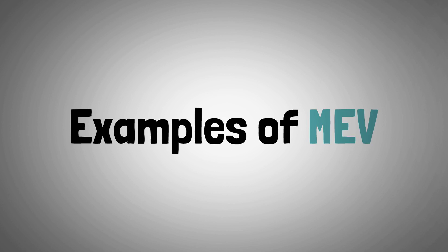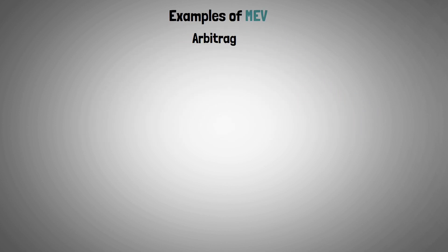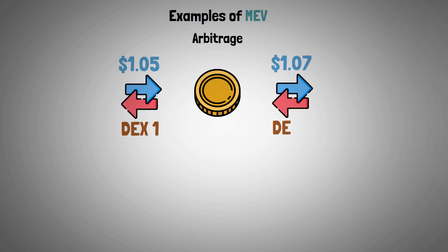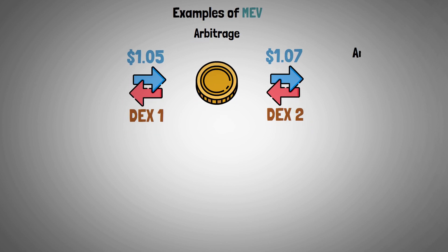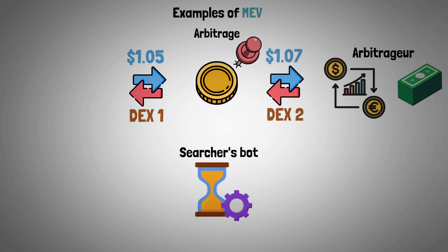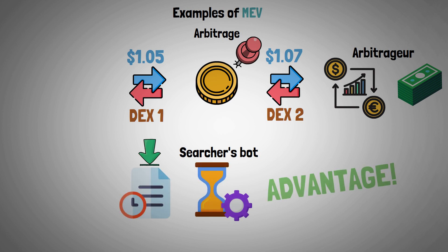Now let's take a closer look at the examples of MEV. Arbitrage: the same asset might have a different price on two different DEXs. An arbitrager will make a trade as soon as they notice this discrepancy in order to profit from it. When a searcher's bot recognizes a pending transaction and inserts their own in front of it, they are able to take advantage of the opportunity value.